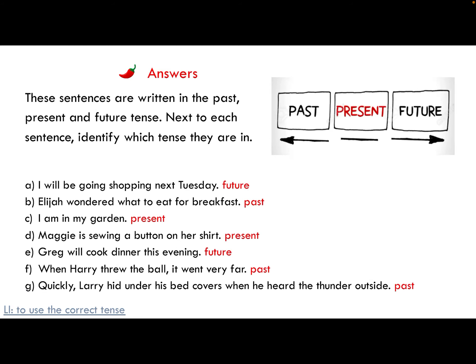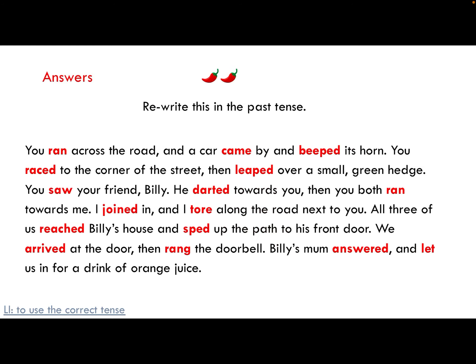Before I log off, I've got some answers — pause it, finish your work, and then I'll show you the answers. So: 'I will be going camping next Tuesday' — Tuesday hasn't happened yet, so it's future. 'Elijah wondered' — that already tells me it's past tense. 'First, I am in my garden' and 'Maggie is sewing a button' — those two are present. 'Greg will...' — that's future. 'When Harry threw the ball' — 'threw' tells me it's past tense. 'Larry hid' — past as well.